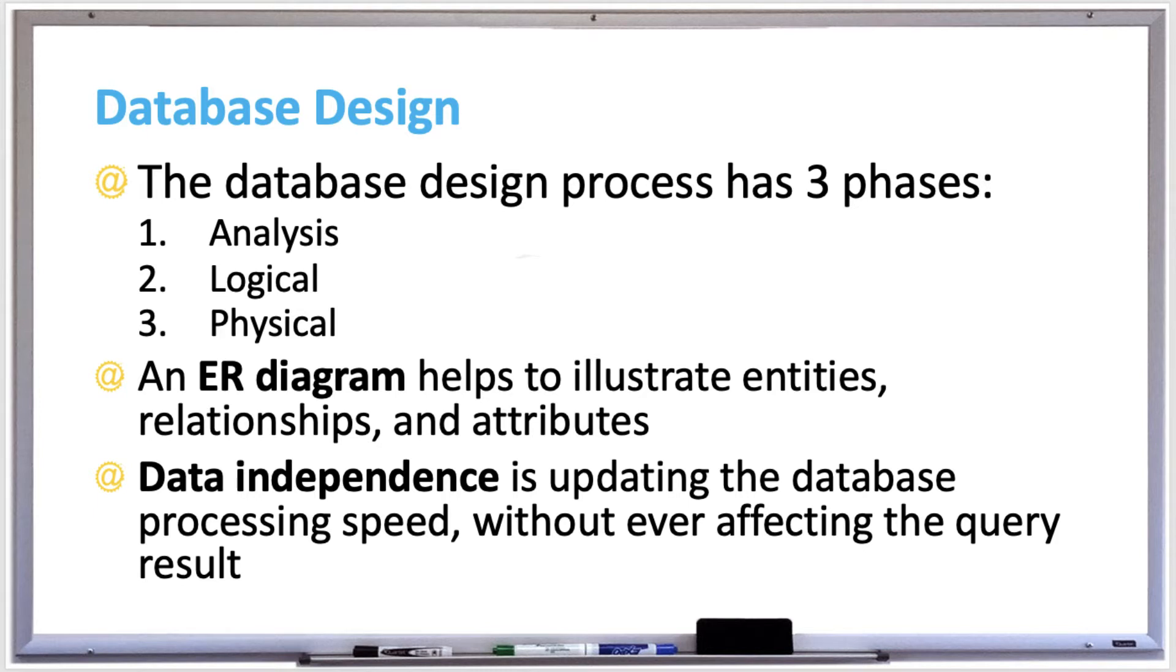An entity is usually a noun, such as a person, place, or thing, or an activity, and the relationship is the link between the entities, and an attribute is a property that describes the entity. For example, age to describe a person's age.